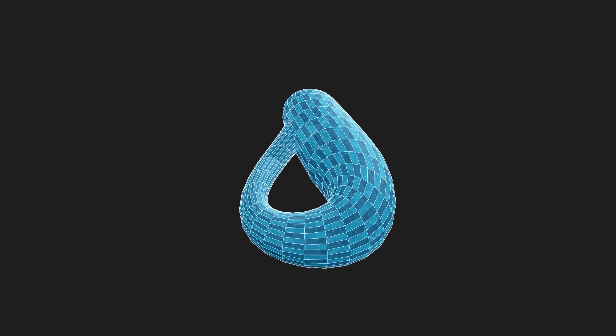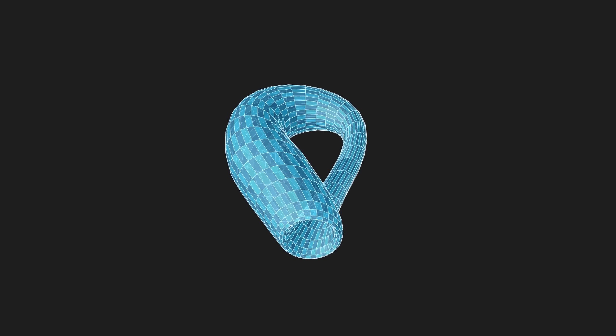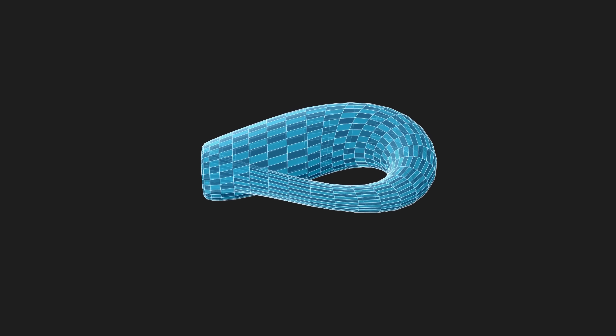Klein Bottle is the most well-known example of a surface that can be immersed, but not embedded in R³. And we actually need the fourth dimension to untangle this self-intersection.